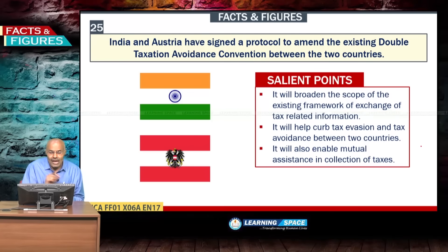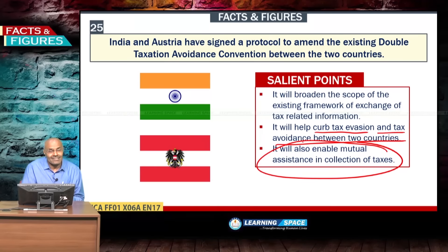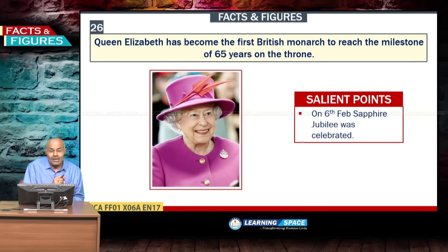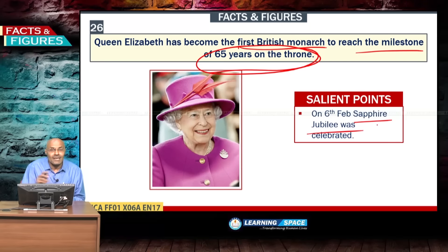India and Austria signed a protocol to amend the existing Double Taxation Avoidance Convention to help curb tax evasion and tax avoidance, and to enable mutual assistance in collection of taxes. Queen Elizabeth became the first British monarch to reach 65 years on the throne, a milestone known as the Sapphire Jubilee.